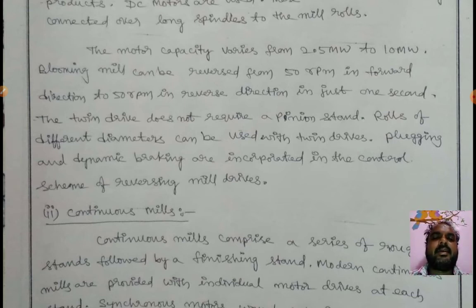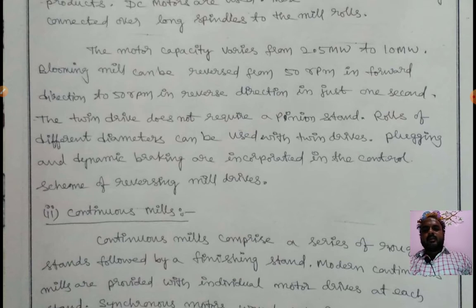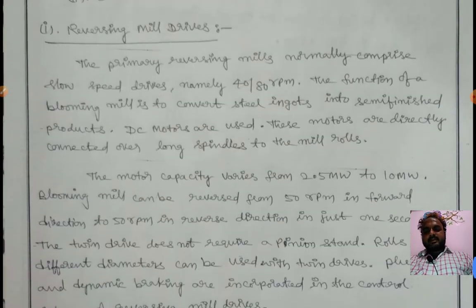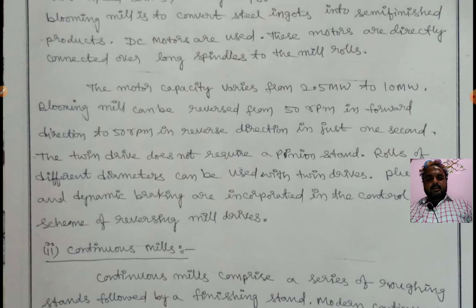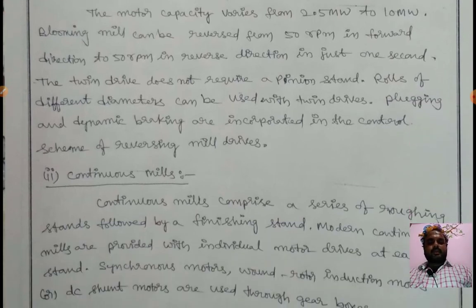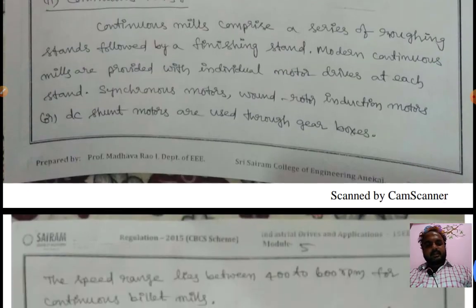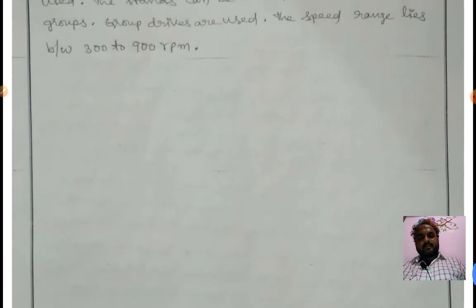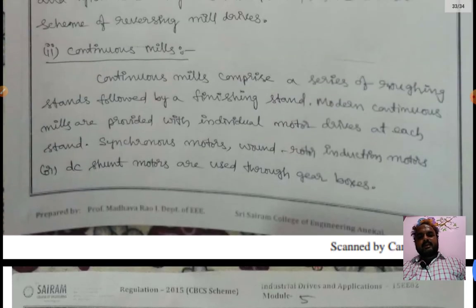The motor capacity varies from 2.5 megawatts to 10 megawatts. Blooming mills can be reversed from 50 RPM in forward direction to 50 RPM in reverse direction in just one second. Plugging and dynamic braking are used in this type of mill.